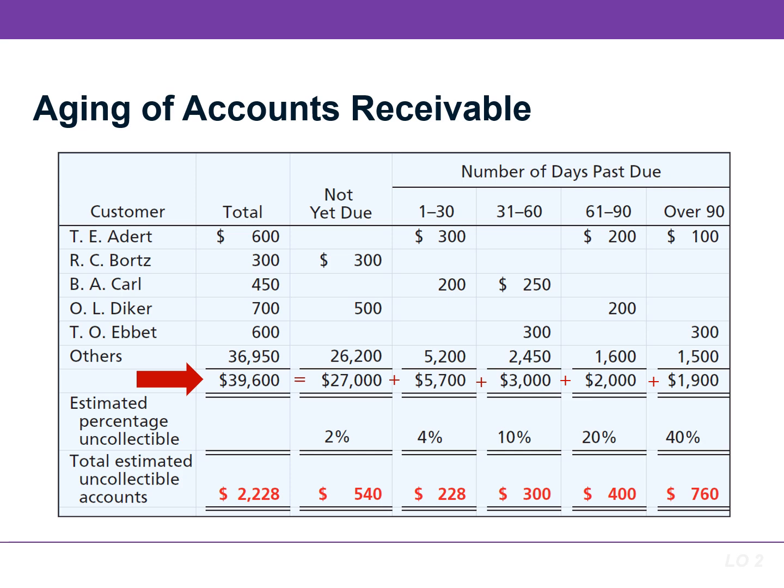After the company arranges the accounts by age, it determines the estimated percentage uncollectable or bad debt loss rate. This is based on past experiences. The longer a receivable is past due, the less likely it is to be collected. As a result, the rate increases as the number of days past due increases. In this example, the rate increases from 2% to 40%. To determine the estimated uncollectable amounts, we simply multiply the totals of each category by the bad debt loss rate.